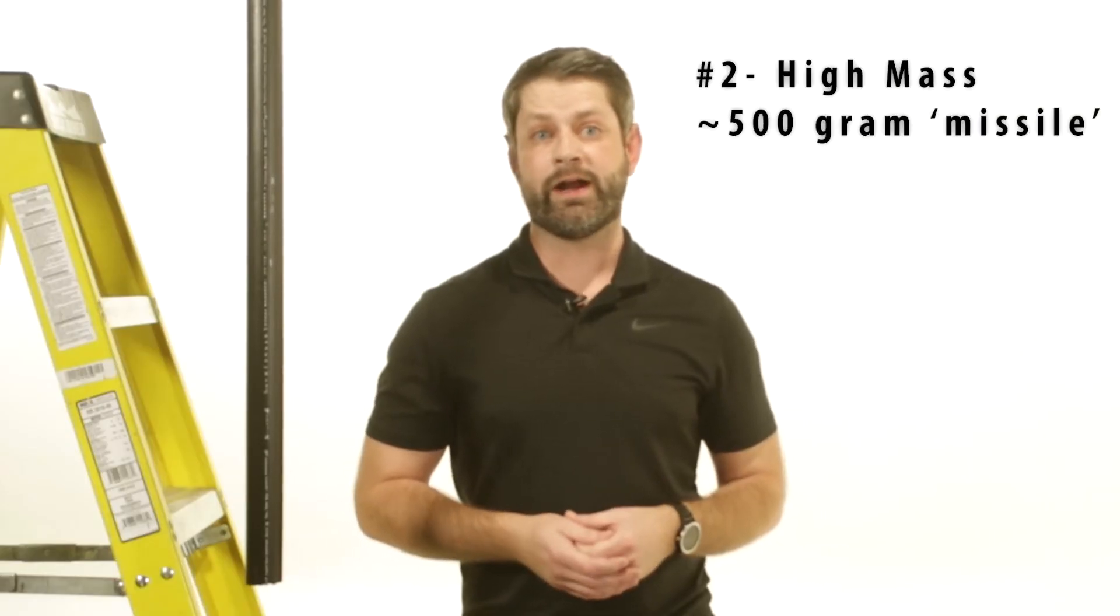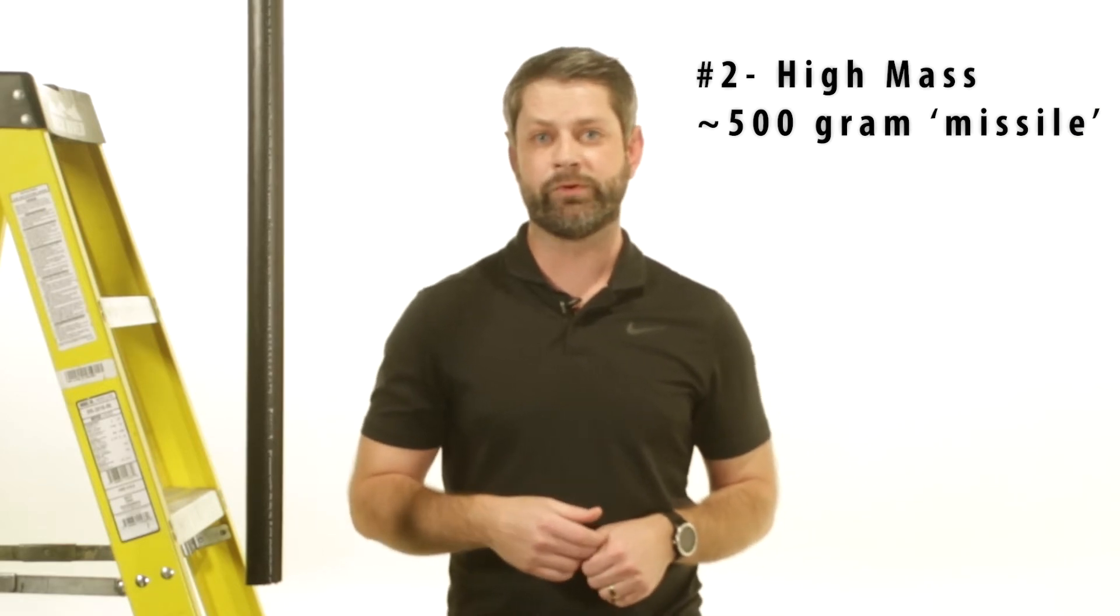Instead, we'll move on to the high mass test. This is essentially dropping a 500-gram, or just over a pound, missile. In our case, this is an auger bit from 50 inches to test the lens's protection from common tools that may become falling hazards. For comparison, most hammers are between 453 and 623 grams, or 16 to 22 ounces.